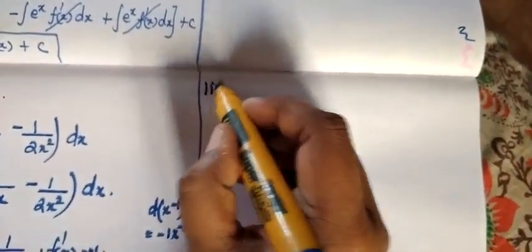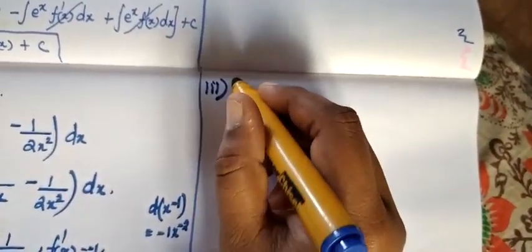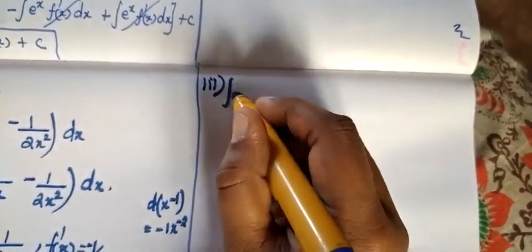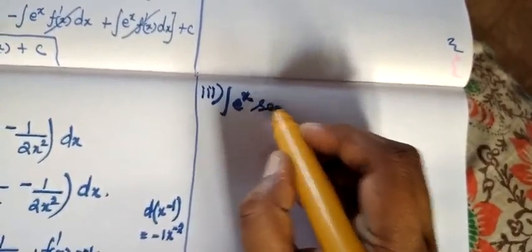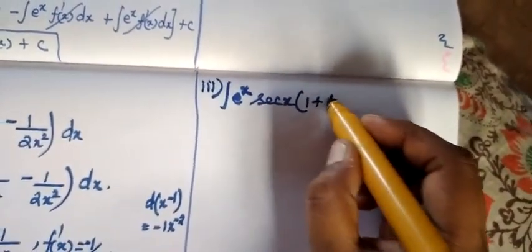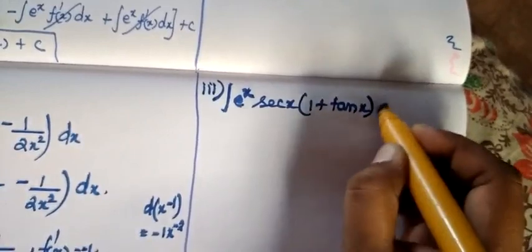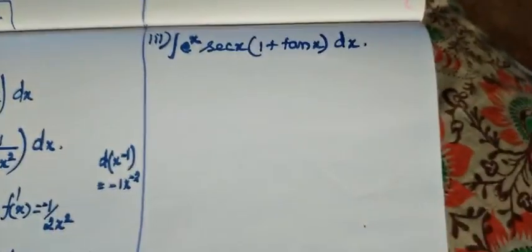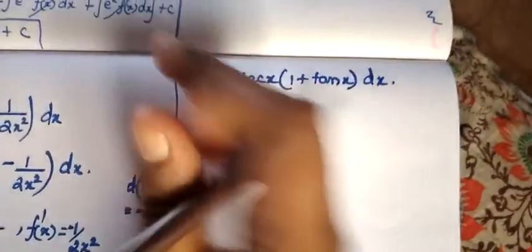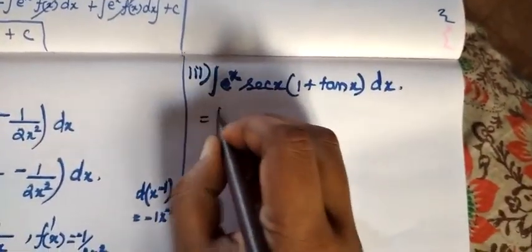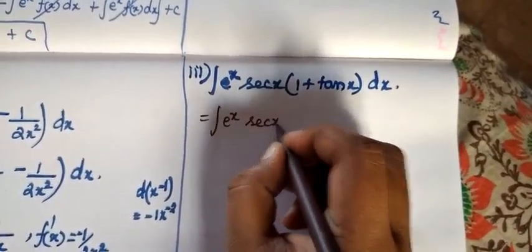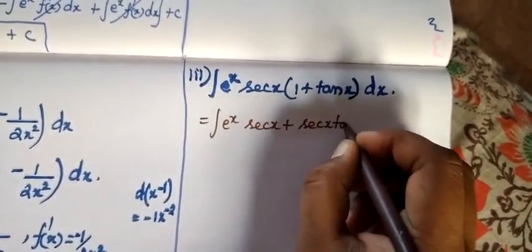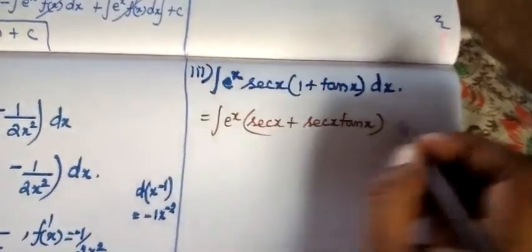Our third problem is integral eˣ sec(x) times (1 plus tan x) dx. Now we expand inside: eˣ times (sec(x) plus sec(x)tan(x)) dx.